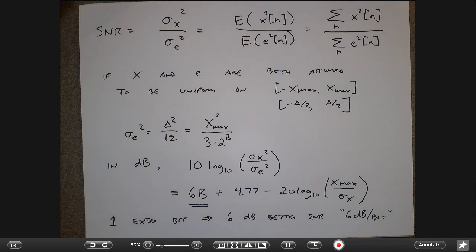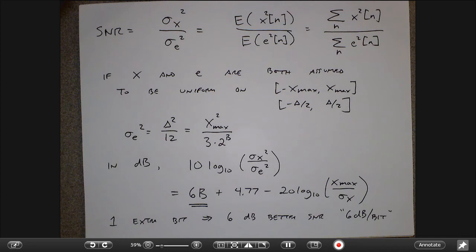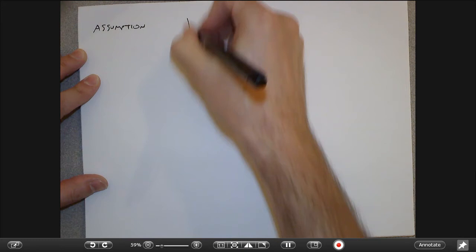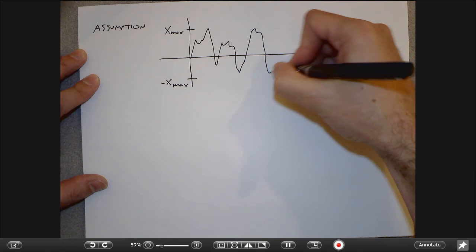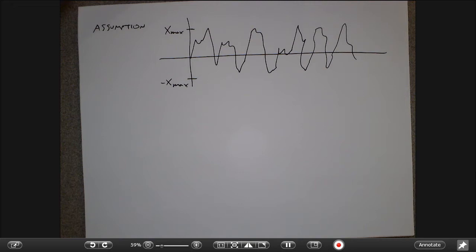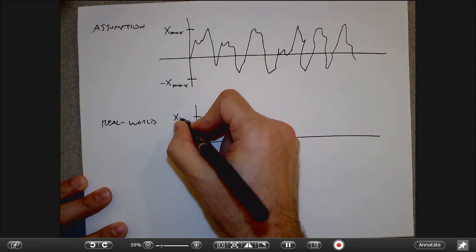This is only an approximation, but it actually does pretty well. Part of the reason it may not work well in practice is the underlying assumption that the original signal nicely ranges between −x_max and +x_max. The assumption is that the signal looks something where it ranges nicely between positive and negative values throughout the whole time domain. In practice, especially for speech, that probably isn't true.